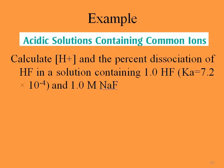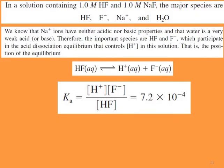We need to calculate the concentration of protons and the percent dissociation of HF in a solution containing 1 M HF (Ka = 7.2 × 10⁻⁴) and 1 M NaF. In a solution containing 1 M HF and 1 M NaF, the major species are HF, F⁻, Na⁺, and H₂O. HF is hydrofluoric acid — it is a weak acid, so it does not dissociate completely; at equilibrium we have both undissociated and dissociated forms.